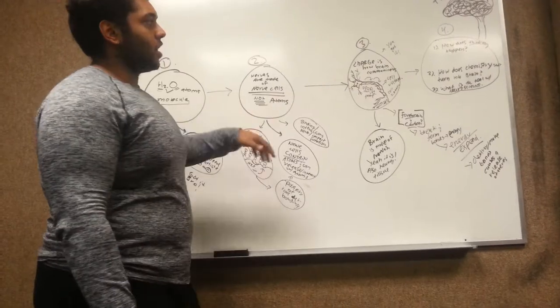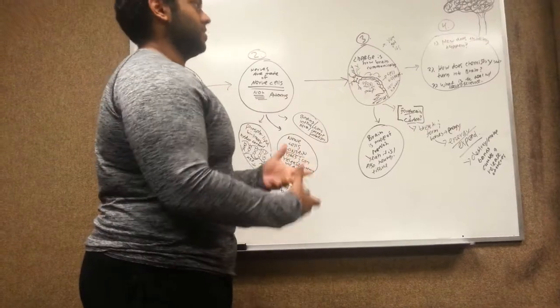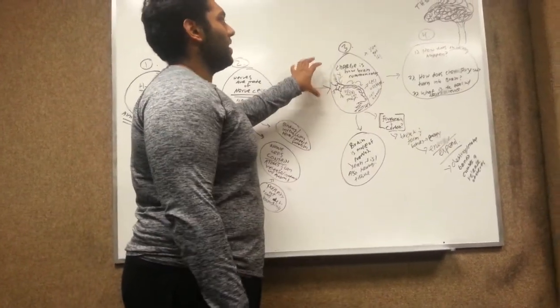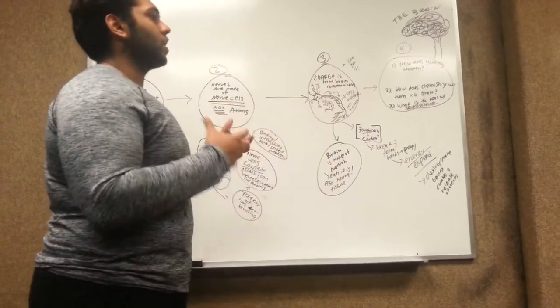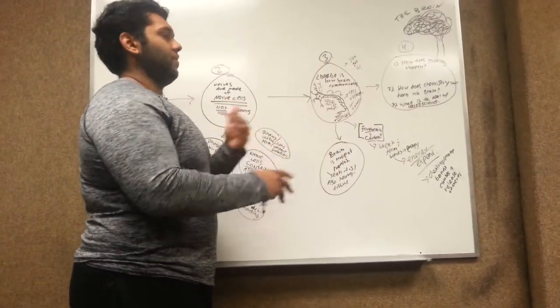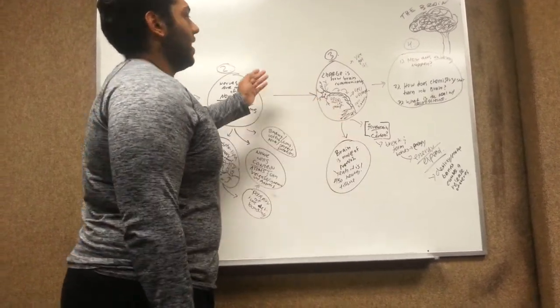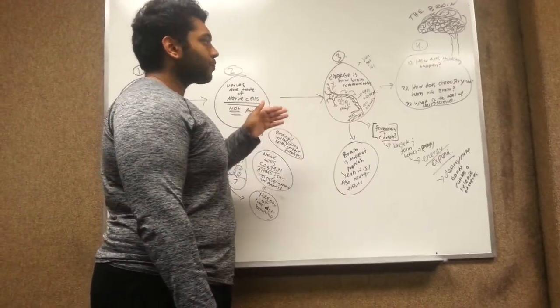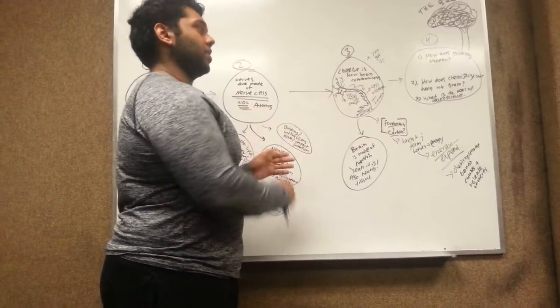So from there, we're going to jump into a more broader, more complex system, which you've mentioned, you had some questions about in comments. And that is how signaling occurs. And you are correct, signaling occurs in the brain via a charge. So here we have a nerve cell that has a voltage, much like a battery. And when this voltage changes...